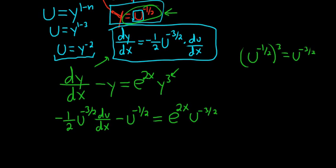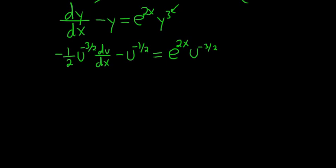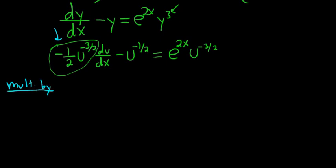To get the equation into standard linear form, we multiply through by what's needed to make the coefficient of du/dx equal to one. We need to multiply by negative two (to cancel the negative one-half) and by u to the three-halves (to cancel the u to the negative three-halves). When we multiply u to the three-halves by u to the negative three-halves, we add exponents and get u to the zero, which is 1. So performing this multiplication, the du/dx term becomes just du/dx.